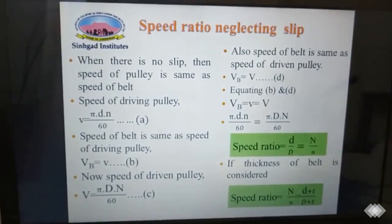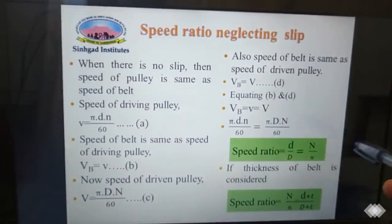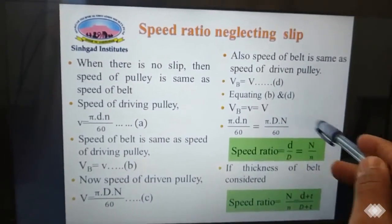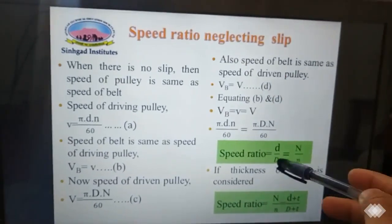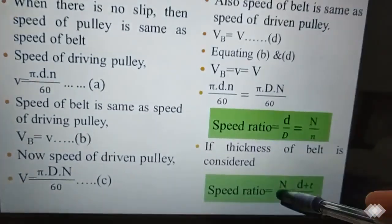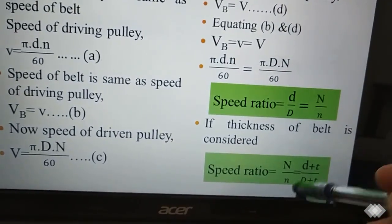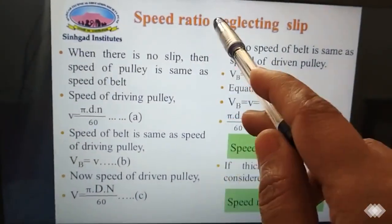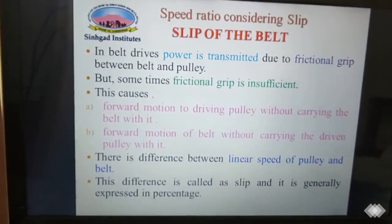So we get the speed ratio: small d divided by capital D equals capital N divided by small n, since diameter is inversely proportional to RPM. This is the expression for speed ratio of the belt drive without considering belt thickness. If we add the thickness t, the equation becomes: capital N divided by small n equals (small d + t) divided by (capital D + t). This is the speed ratio neglecting slip.